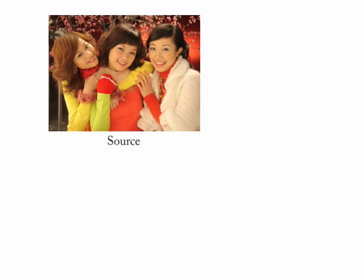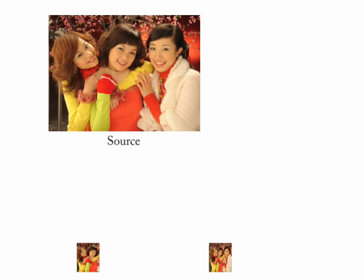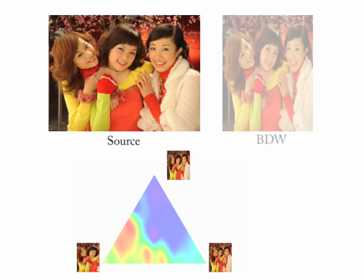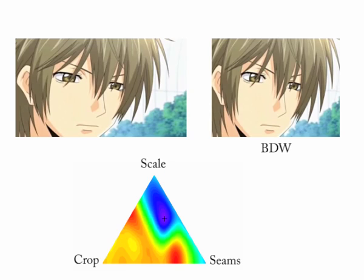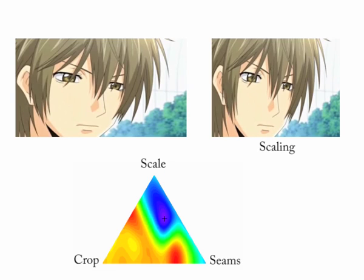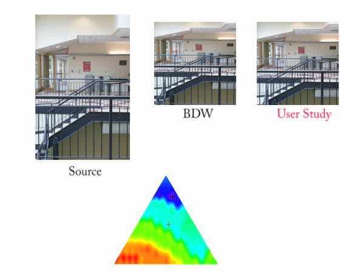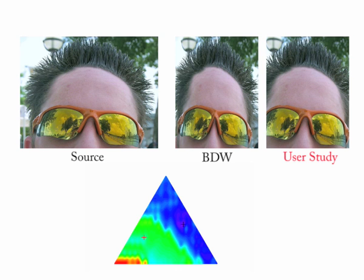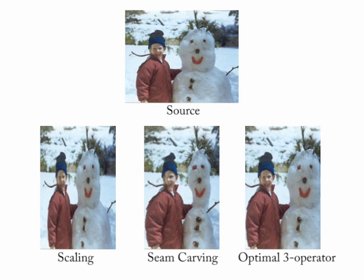In these examples, seam carving, cropping, and scaling are combined in a regular manner. The position of the optimal results are marked on the search space. Here we show a comparison of the optimization results versus the mean user study results that were achieved interactively. The position of the two results are also marked on the search space. Here we show a result of an optimal mixed path of three operators.